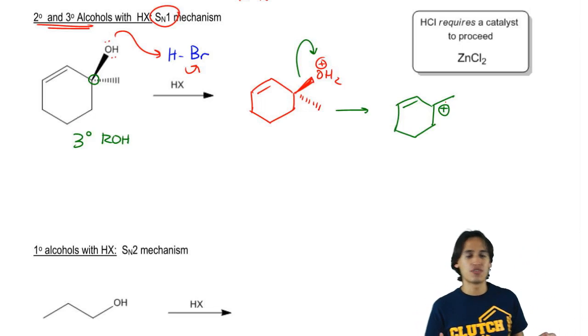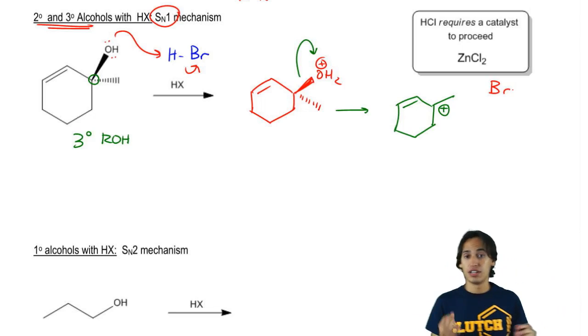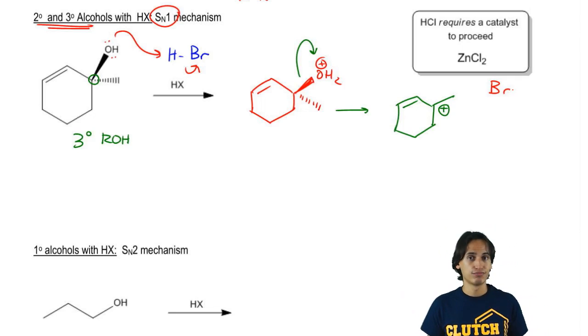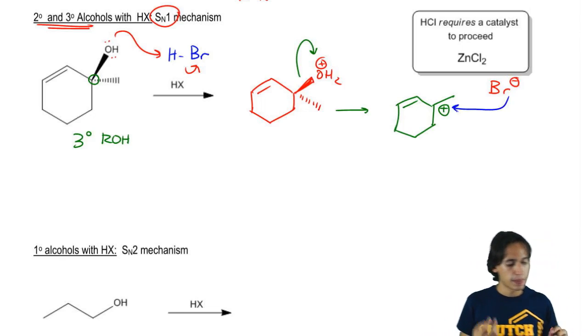So now you might have guessed it. What's going to happen to this positive charge? Well, keep in mind that it could rearrange. If it was unstable, it could have rearranged. Would this carbocation want to rearrange? It's already tertiary. It's happy. So let's go ahead and attack it with the Br. And what I'm going to get at the end is an alkyl halide that looks like this.